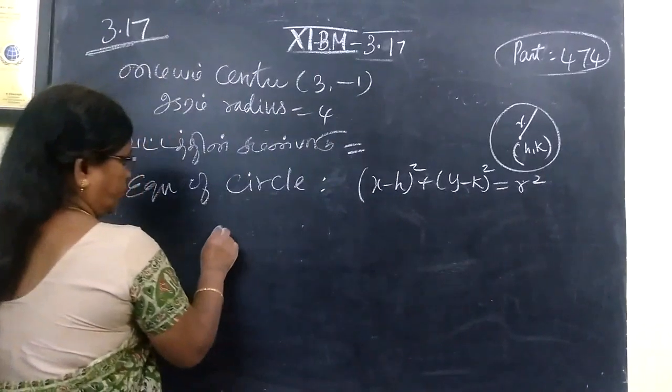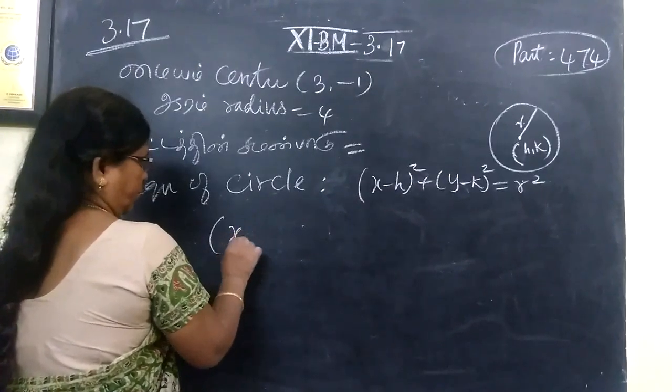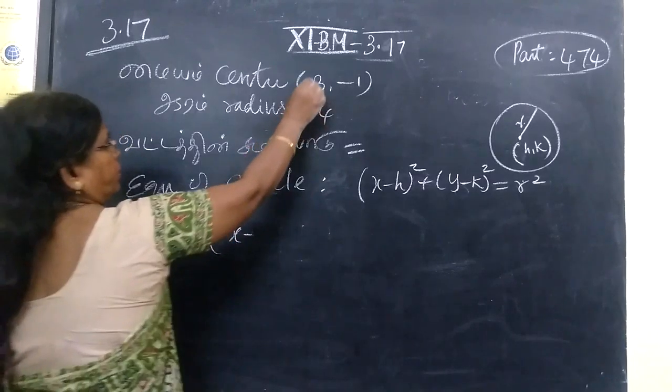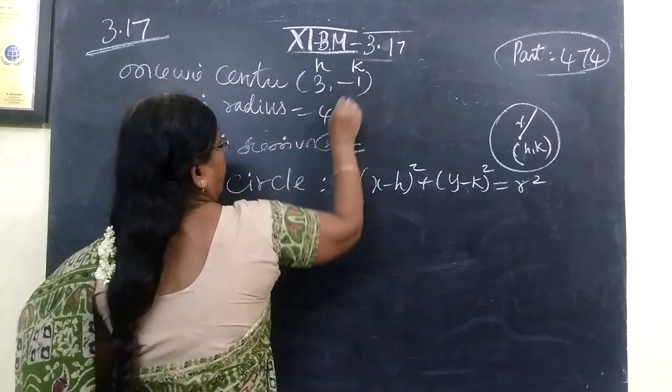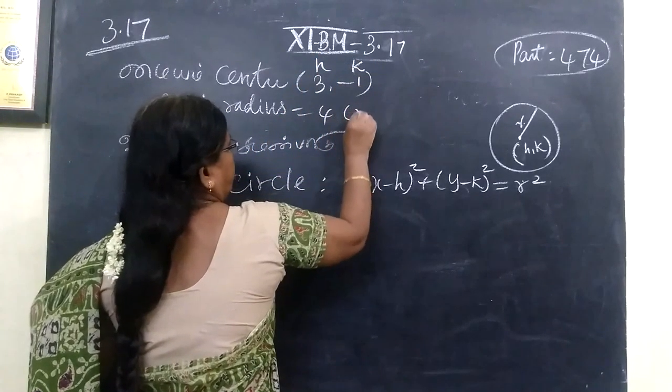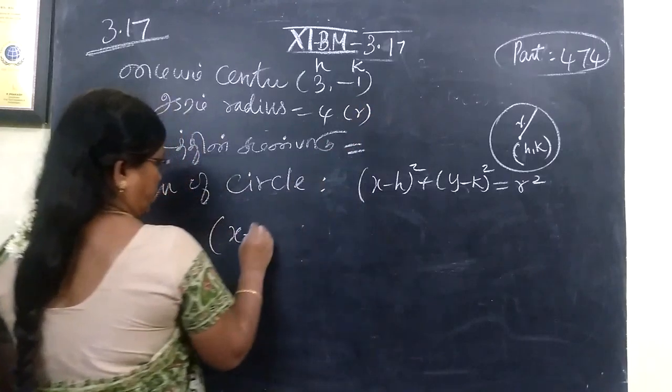Now we have to substitute. So, x minus — what is h? This is h, this is k, and this one is r.